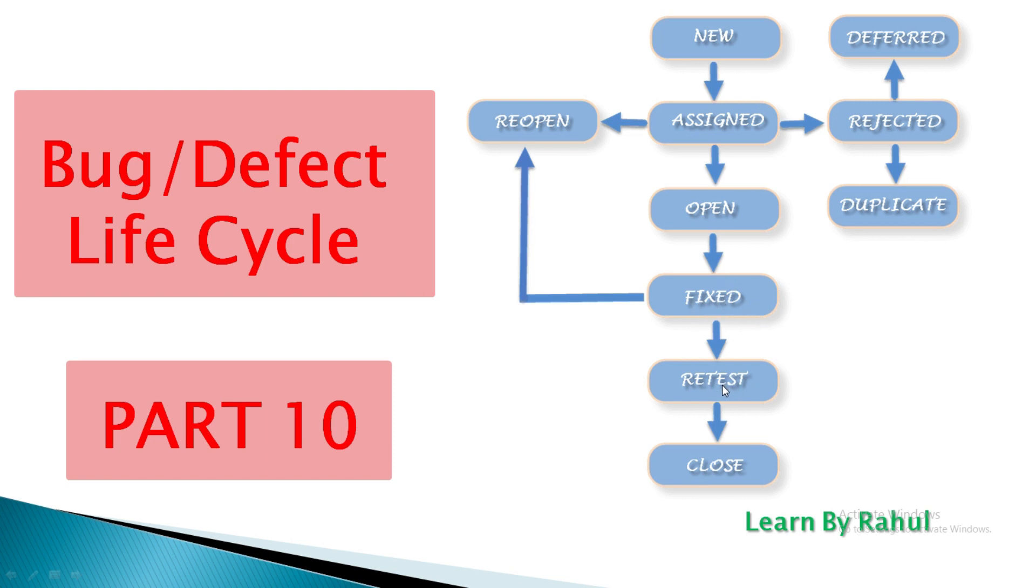After being assigned, there may be three types of conditions. First is DEFERRED. If the present bug is not of prime priority and is expected to get fixed in the next release, then status DEFERRED is assigned.